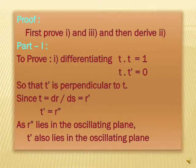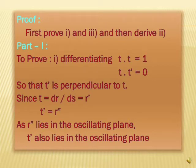Proof. We will prove the first and third formulas first, then derive the second. Part one, to prove the first: differentiating t · t = 1 gives t · t′ = 0, so t′ is perpendicular to t. Since t = dr/ds = r′, we have t′ = r″. As r″ lies in the osculating plane, t′ also lies in the osculating plane.